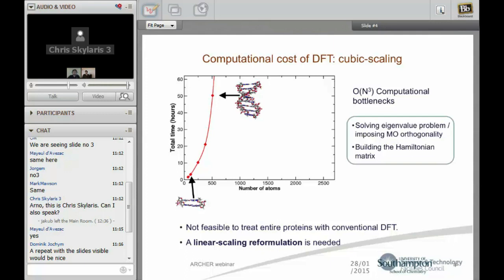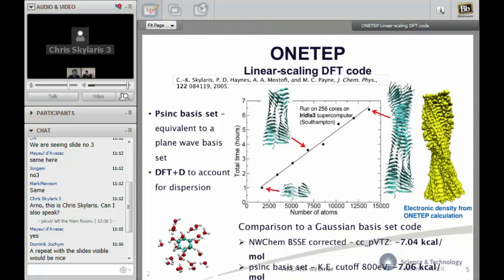Therefore what we have been doing is reformulating density functional theory so that this computational cost increases linearly with the number of atoms. If we go to the next slide we can see the slide about ONETEP.